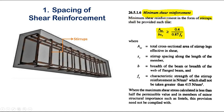The minimum shear reinforcement in the form of stirrups shall be provided such that the ratio of ASV divided by b·SV should be greater than or equal to 0.4 divided by 0.87·fy. Using this minimum shear reinforcement formula, we will find the spacing SV of the stirrups.